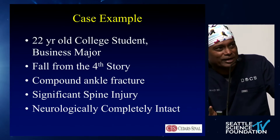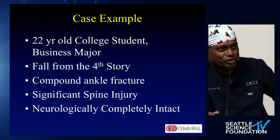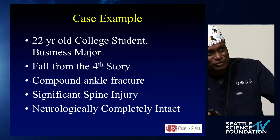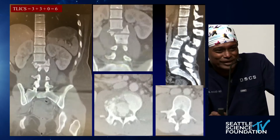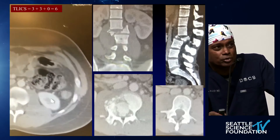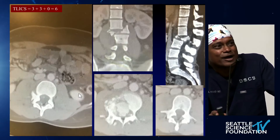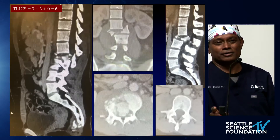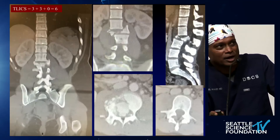I'll leave you with this patient, because this explains everything we talked about in MIS trauma. A 22-year-old USC business major — falls from the fourth story. Compound ankle pylon fracture. Significant spine injury: completely flexion-translated, blown-out L2. The axial image shows 95–100% canal compromise. You can see it completely blown up sagittally. She was totally neurologically intact — not a single grade missing. Completely intact.